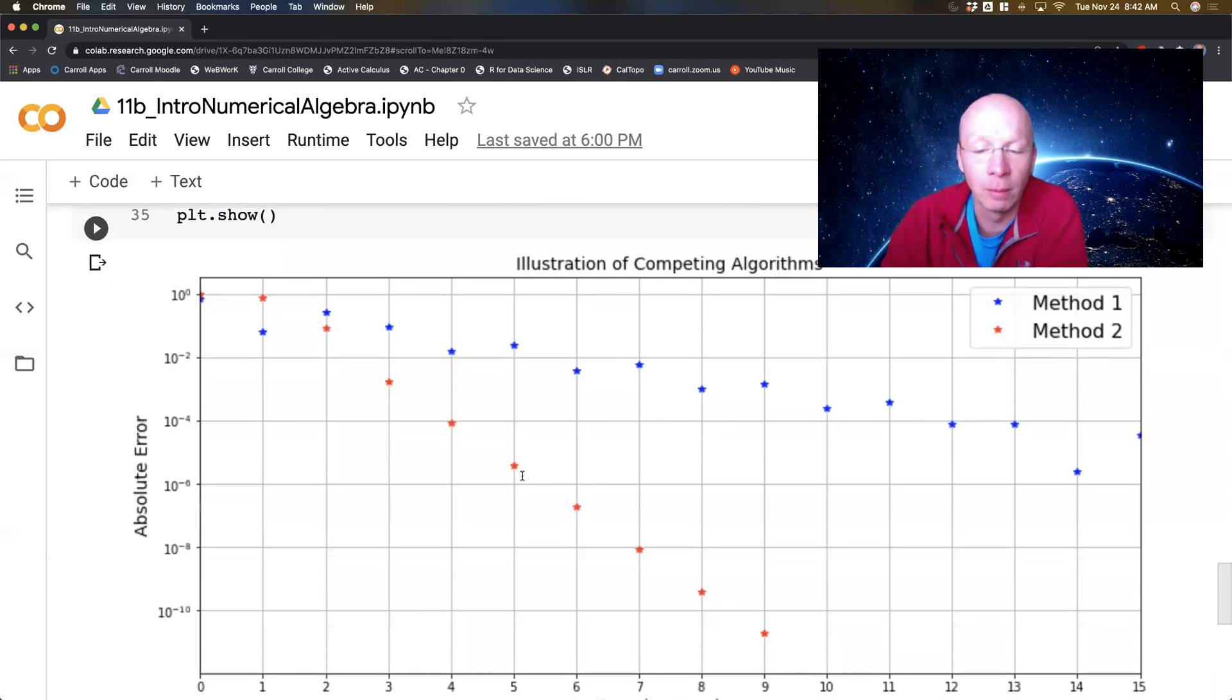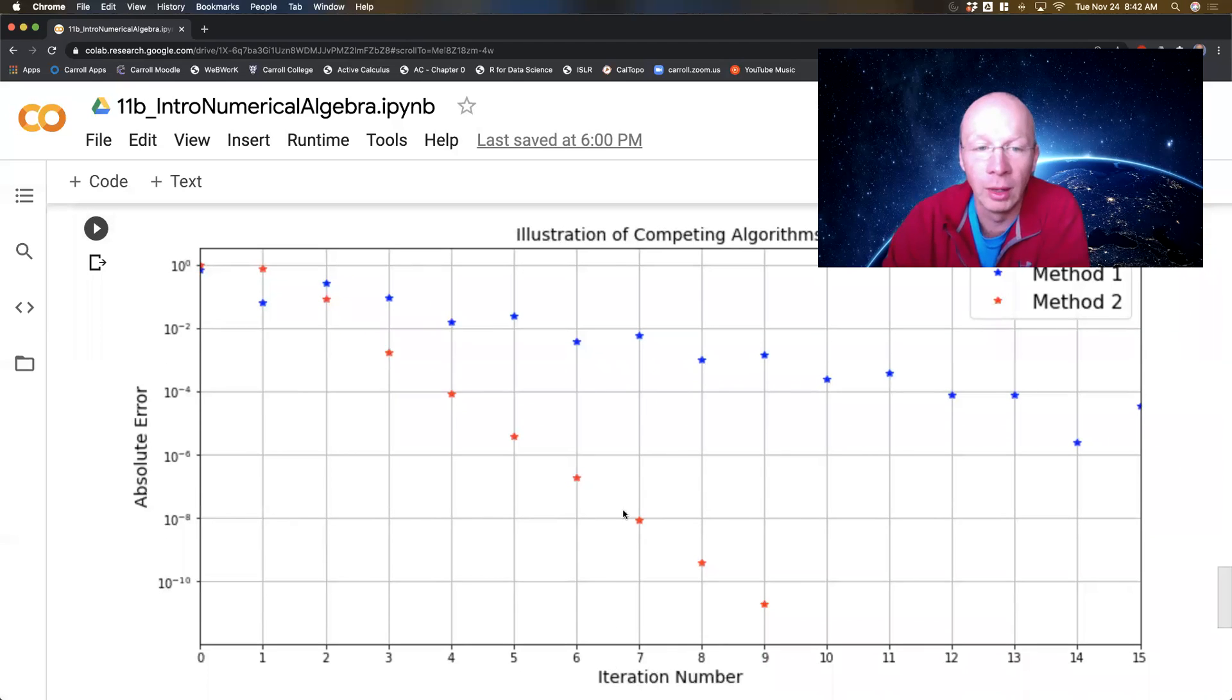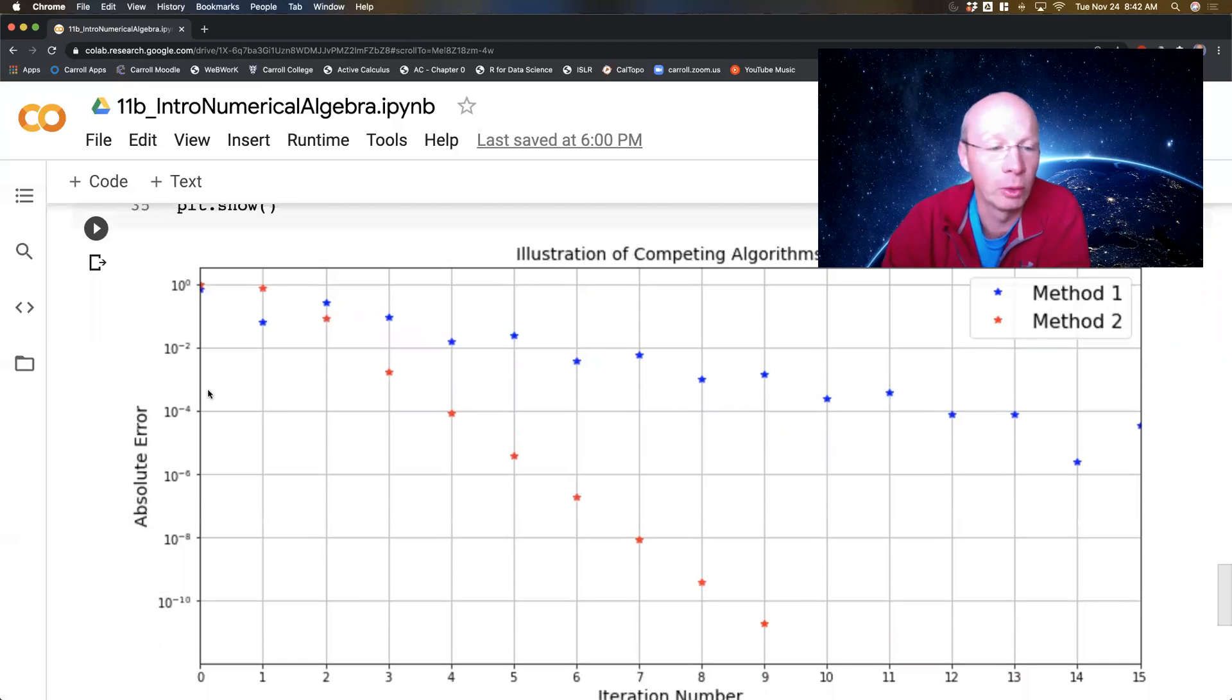Let's say we've got two different competing algorithms and this is iteration number on the horizontal axis and absolute error on the vertical axis. Method number one is the blue stars coming down this way. Method number two is the red stars. Stop and think about it for a second. Which one do you think is actually performing better? Which one would you prefer? Which one would you want to use over the other?